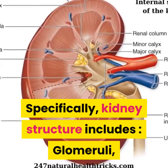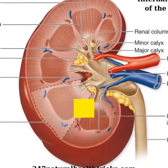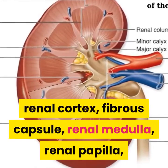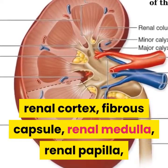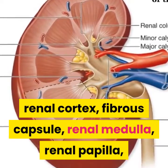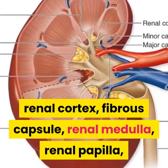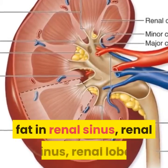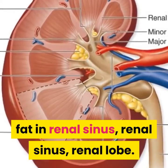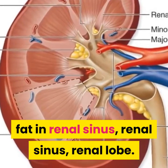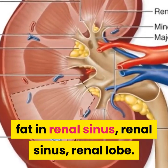Kidney structure includes glomeruli, renal cortex, fibrous capsule, renal medulla, renal papilla, fat in renal sinus, renal sinus, and renal lobe.